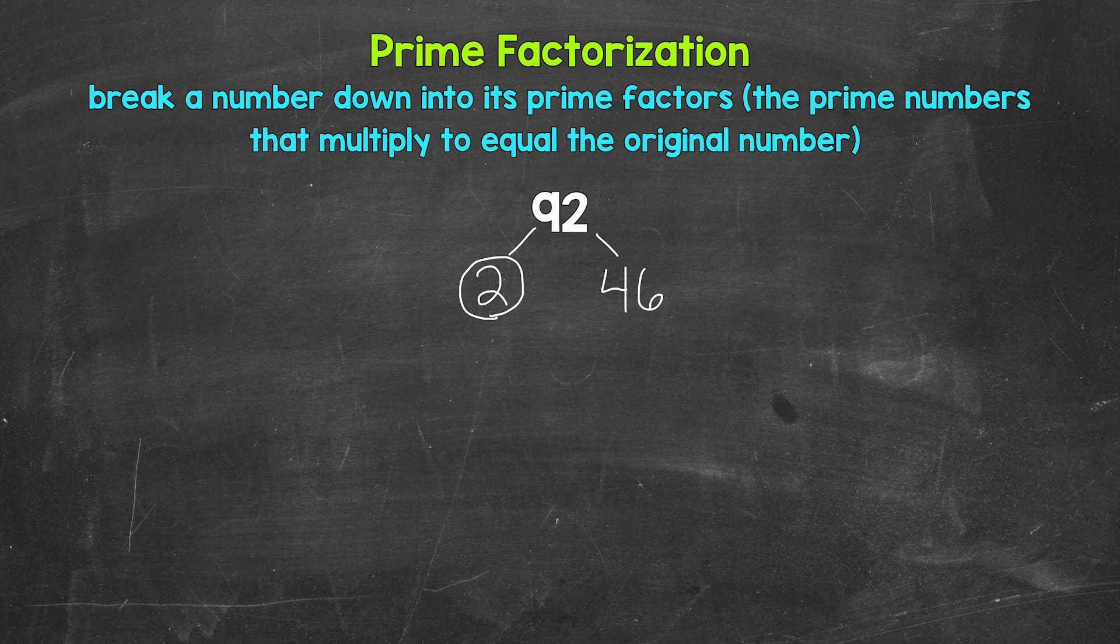Well, 2 and 23 are factors of 46. 2 times 23 is 46. So let's break 46 down into 2 and 23.